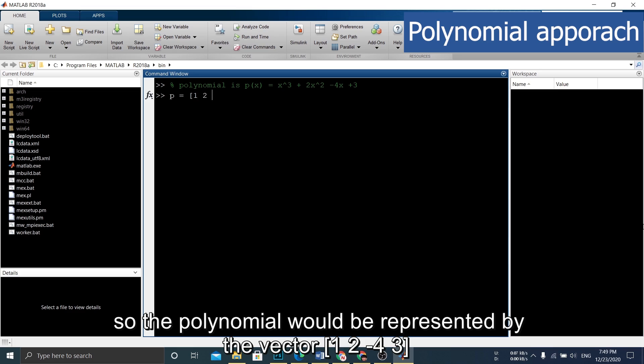So, the polynomial would be represented by the vector [1, 2, -4, 3].